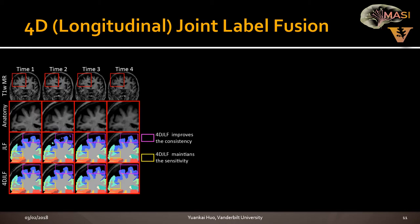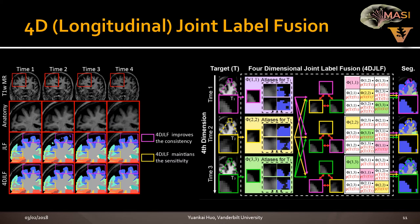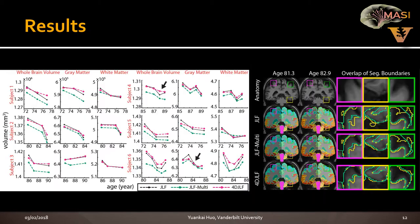I also contributed to the extension theory for longitudinal images. I proposed a method called longitudinal joint label fusion, which considers the spatial-temporal relationship between readers and integrates this idea into joint label fusion. This yields more consistent segmentation results across different time points, while maintaining sensitivity so that true changes across time points are preserved.